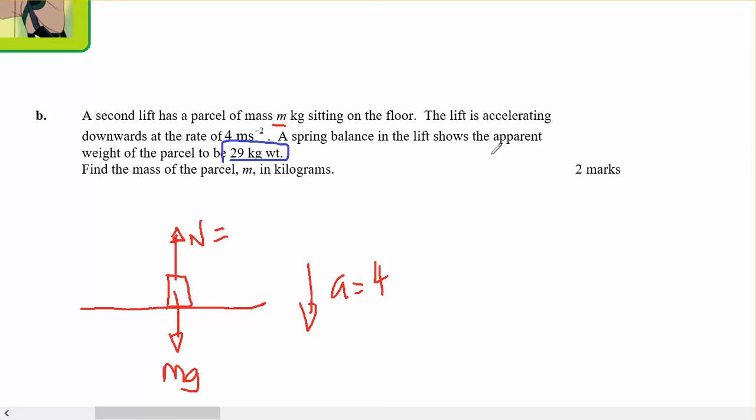So the apparent weight is the normal reactive force. 29 kilogram weight equals 29 G Newtons. That equals 29 G. So I find M.